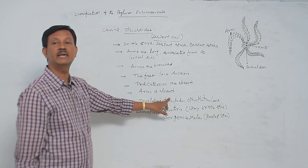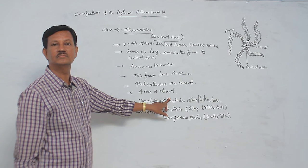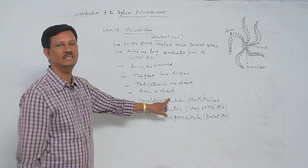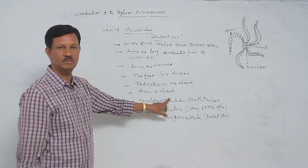And developed respiratory organs are gills. And genital bursa is also present in animals. With the help of that it can respire.